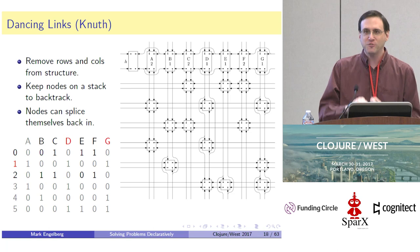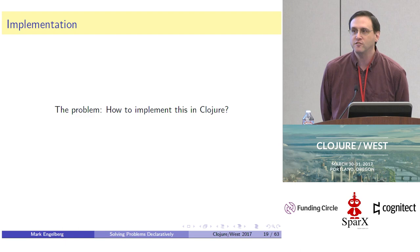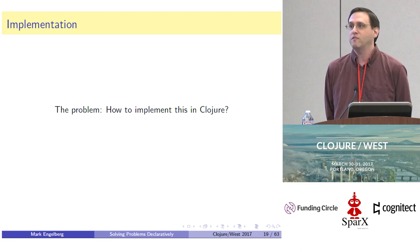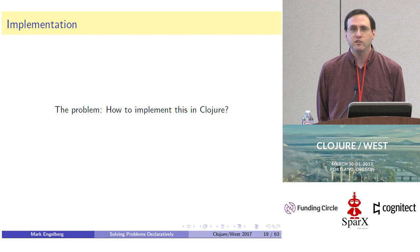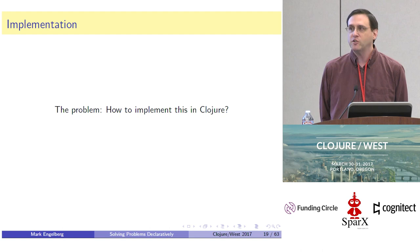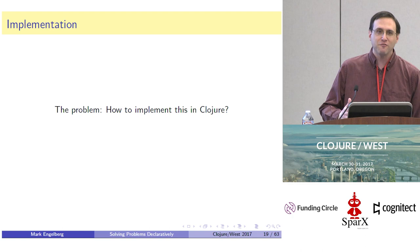These are not Clojure's strong suits, which raises the question: how do you implement something like this in Clojure? I wanted to implement this algorithm in Clojure — I had a problem that would benefit from it. I sat down and tried a bunch of different techniques: records, atoms as pointers — I tried a bunch of things and was not getting the performance I was looking for.